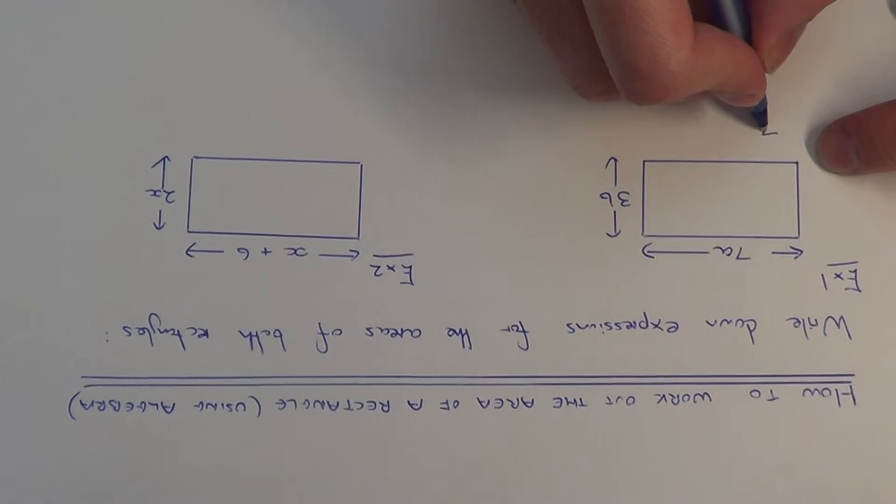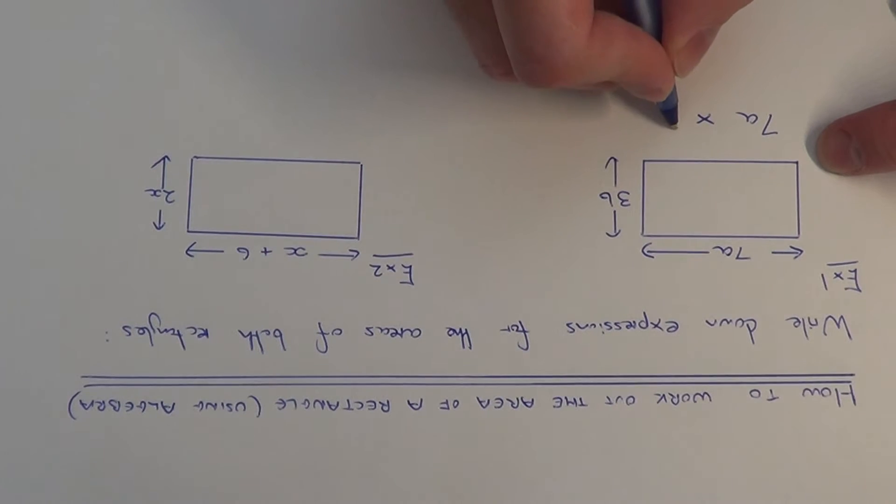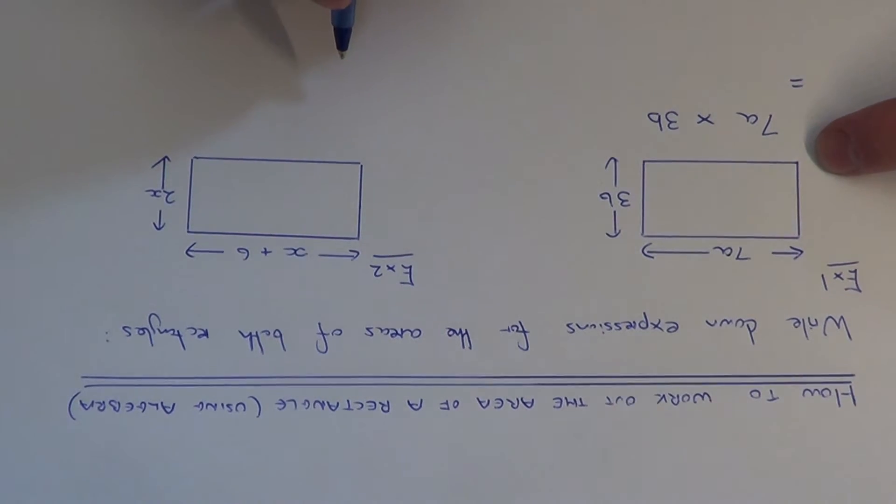So we need to do 7a multiplied by 3b, and then simplify this expression.